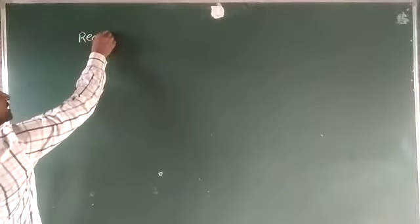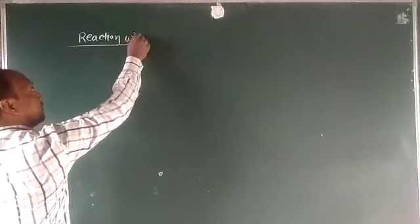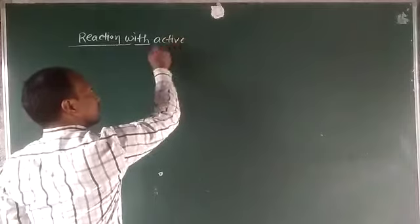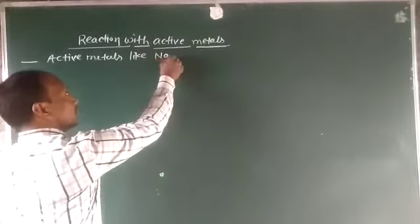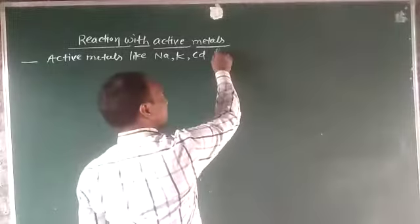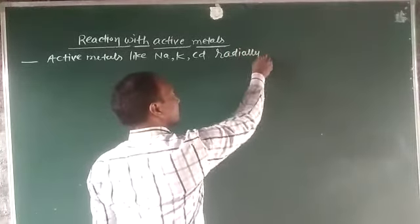The next point we will see is the reaction with active metals. Active metals like sodium, potassium, and cadmium react with alkyl halides.